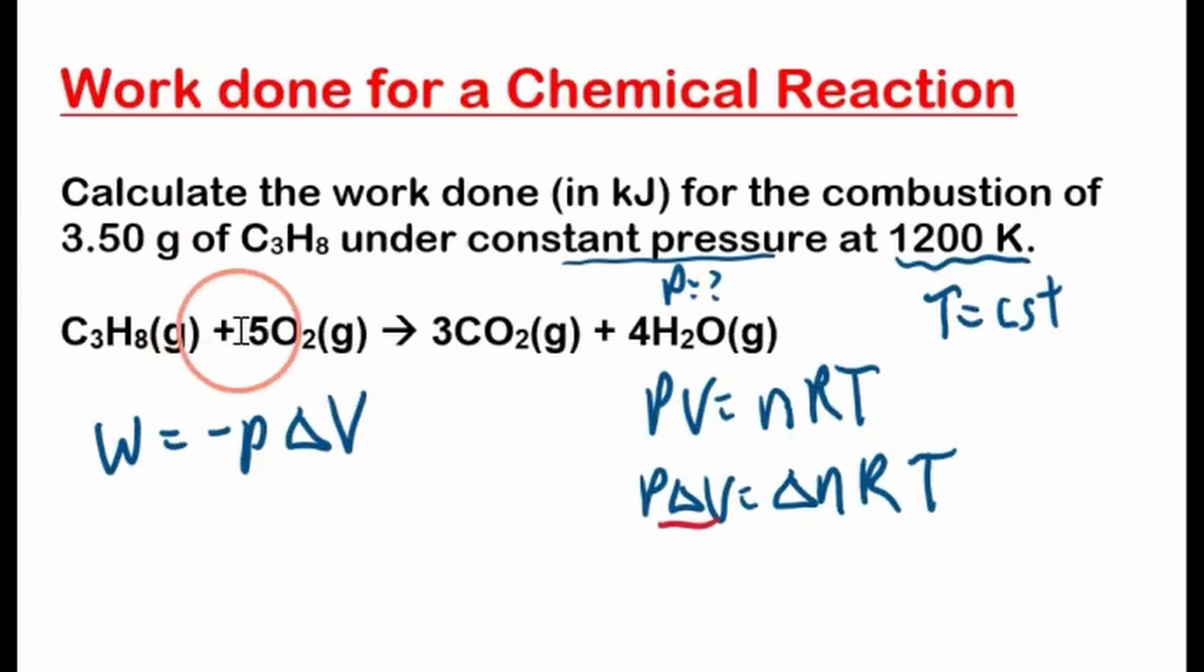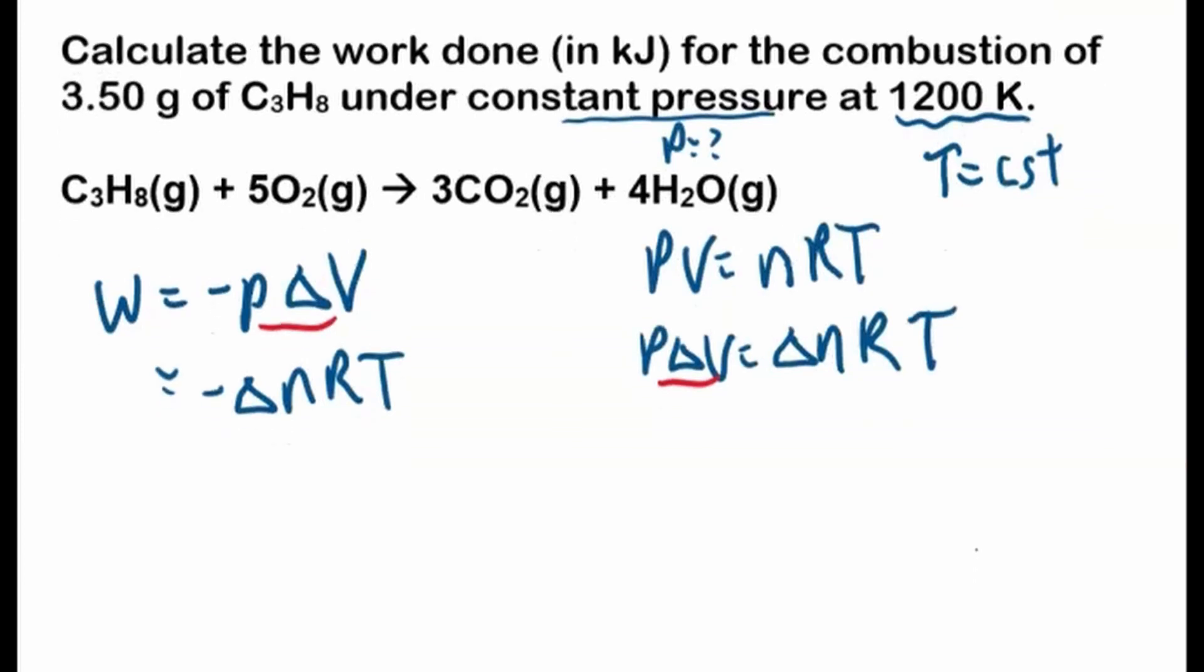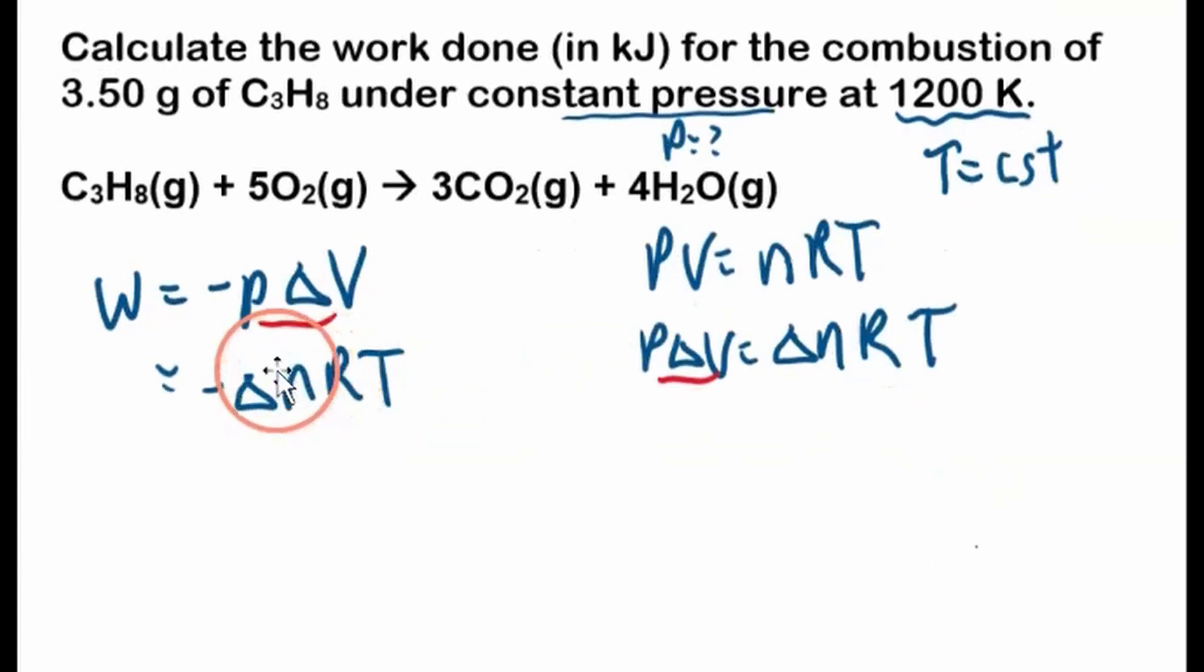Well, P delta V - we're going to substitute delta N RT in for this here. So negative delta N RT. Okay, now we know the temperature is constant, but we don't know the change in moles, and we're going to calculate it based on the balanced equation.